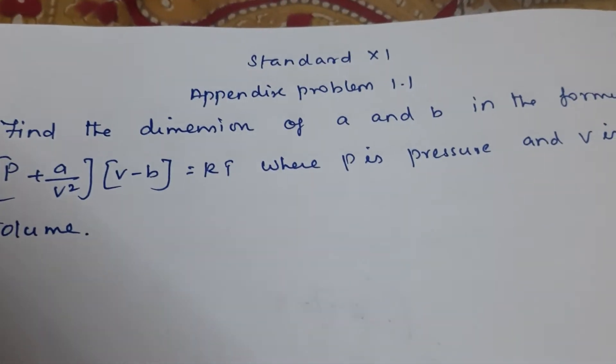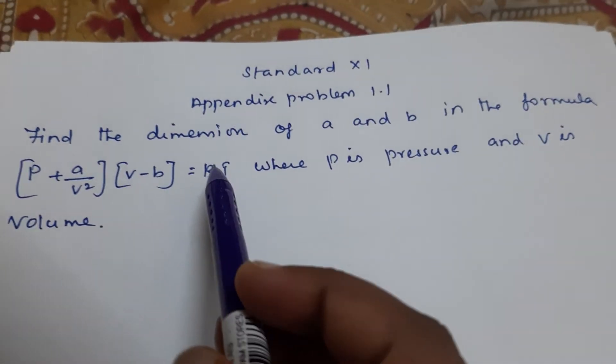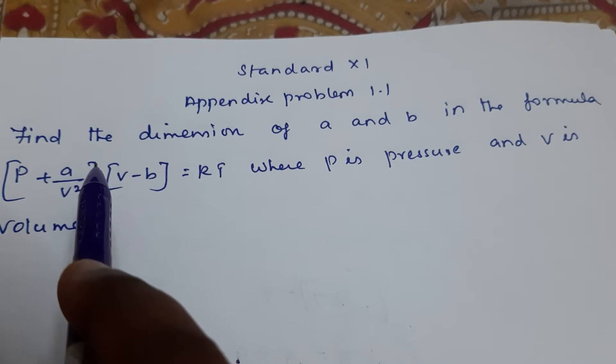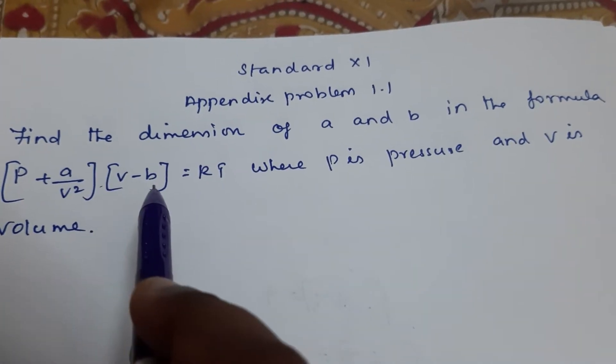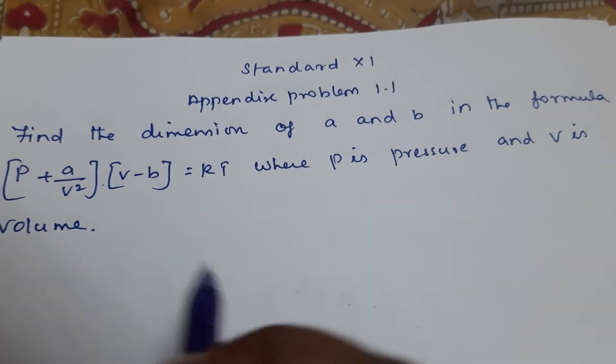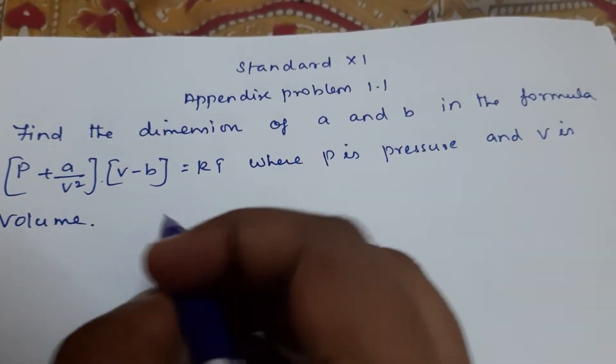Standard level appendix problem 1.1: Find the dimension of a and b in the formula (P + a/V²)(V - b) = RT, where P is pressure and V is volume.